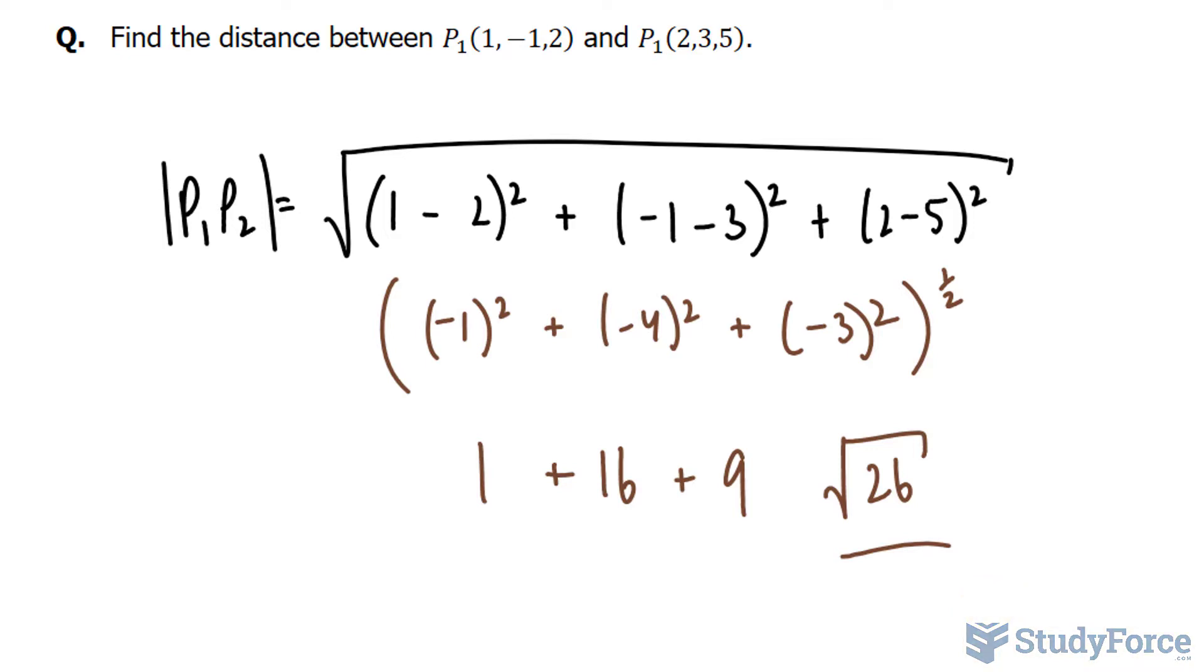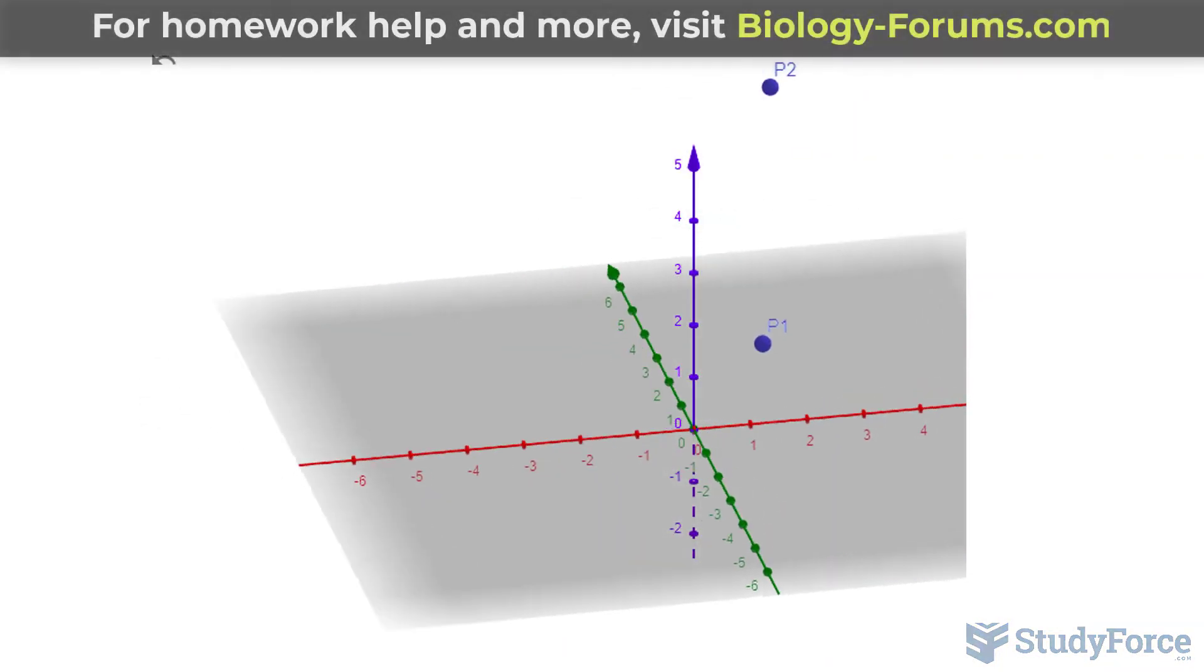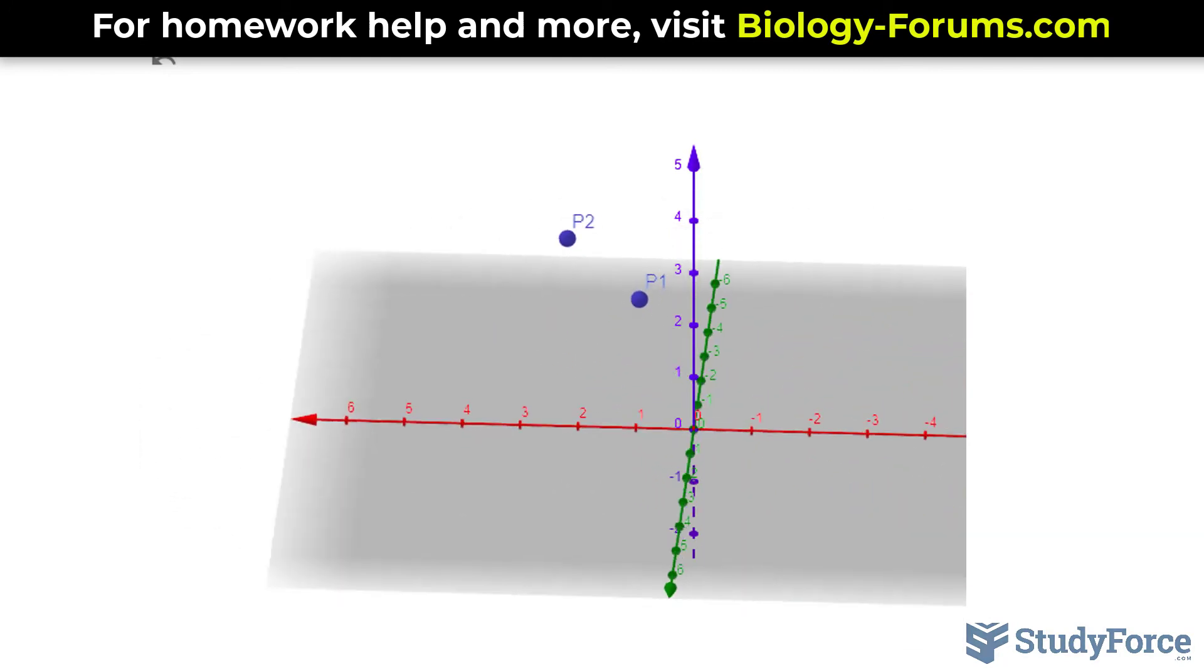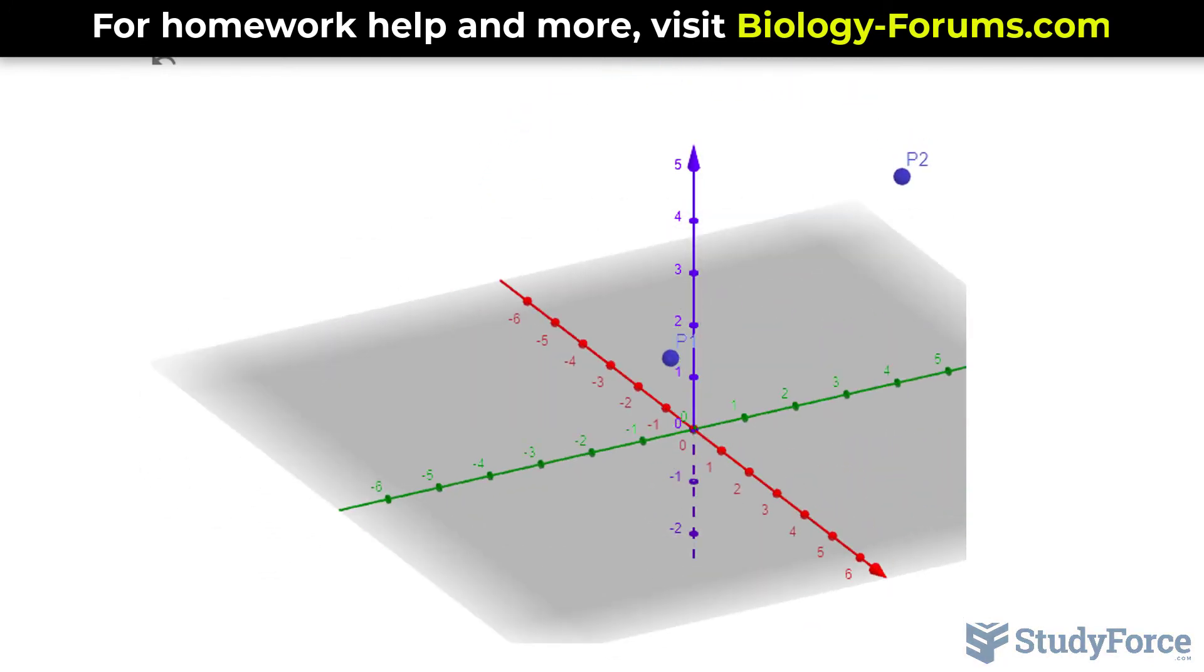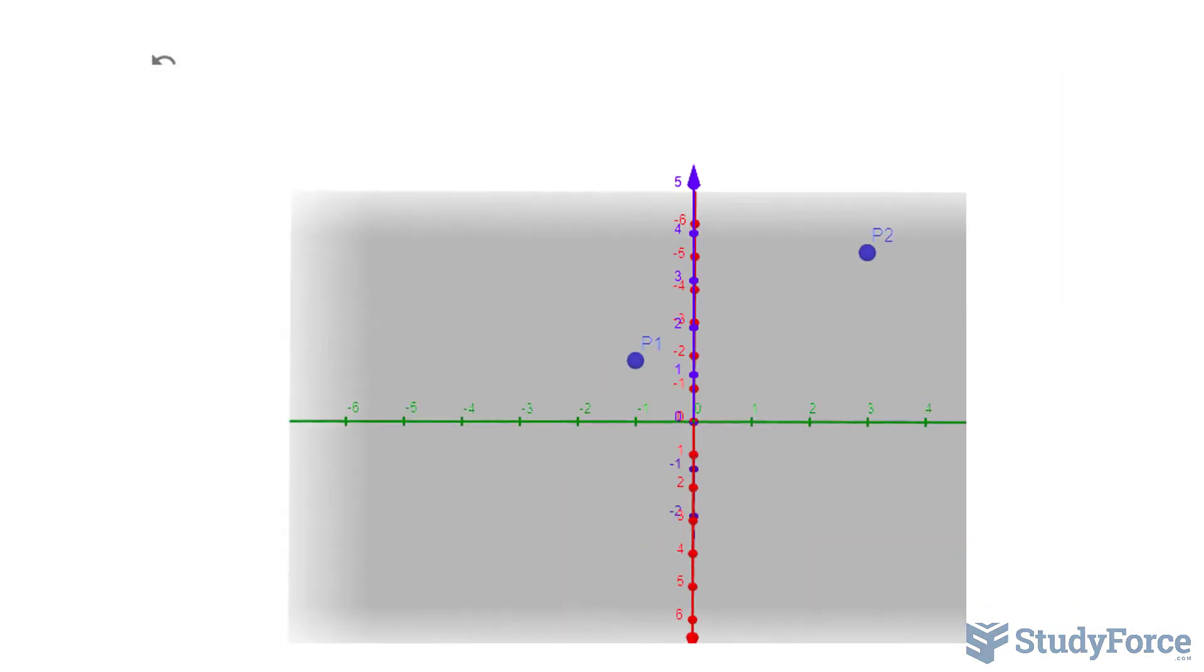Now in 3D, this is what this looks like. So now that we know the distance, what you see on your screen is point 1 and point 2. If we freeze this for a moment, the square root of 26 represents the distance from here to here.